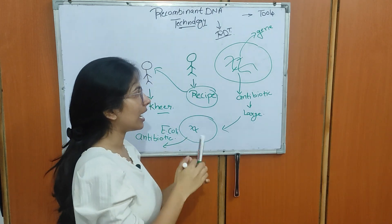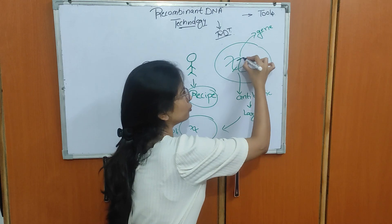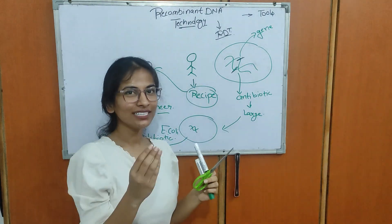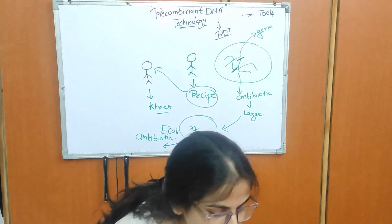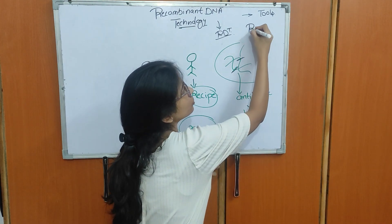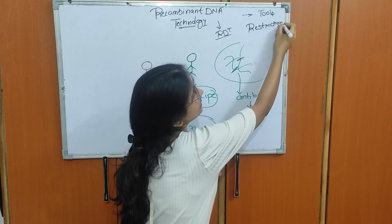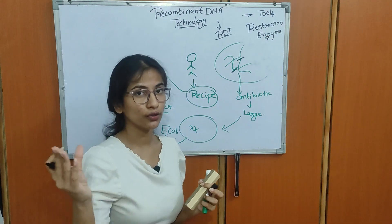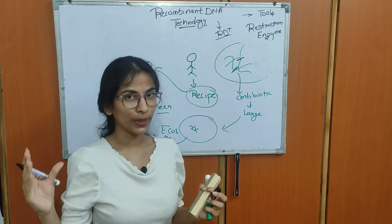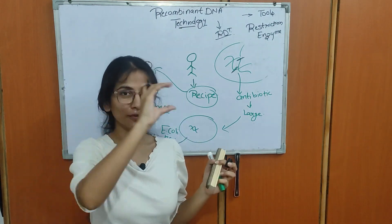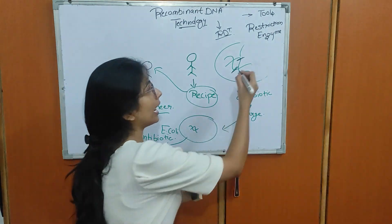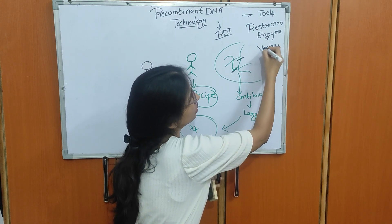RDT requires certain tools. First, I said I would be cutting this gene out, so I would require something like scissors — molecular scissors. This molecular scissor is a restriction enzyme. Restriction enzymes function as molecular scissors. Also, I need to transfer the gene into E. coli, so I would require a molecular vehicle. Vectors function as molecular vehicles — they transport something from one place to another.